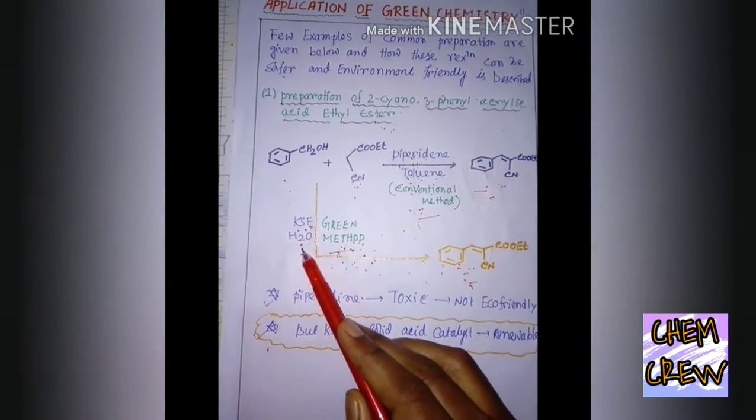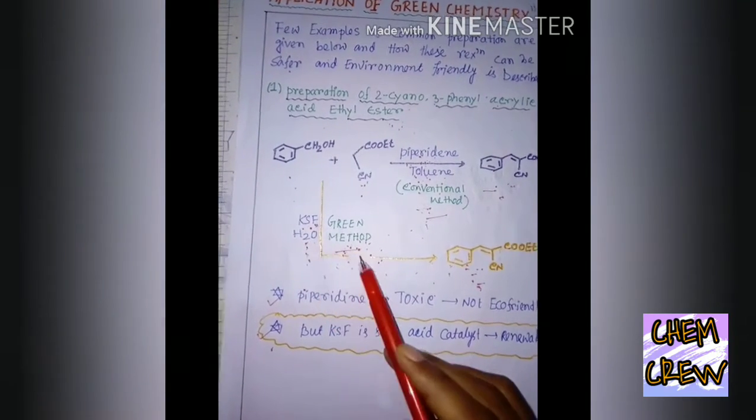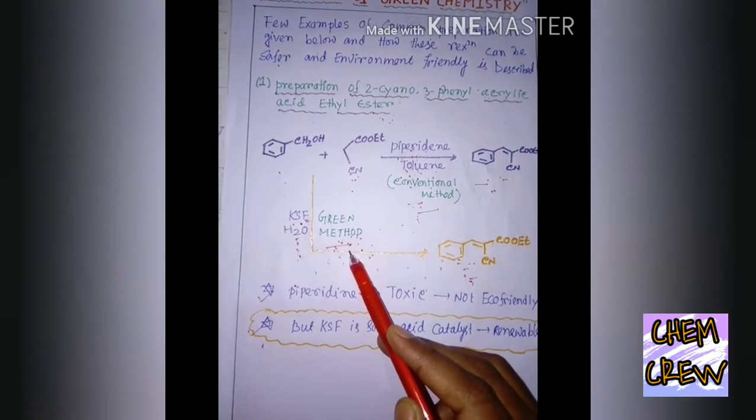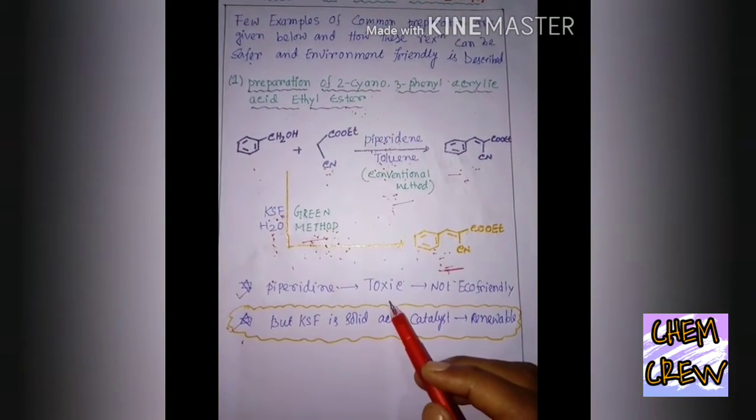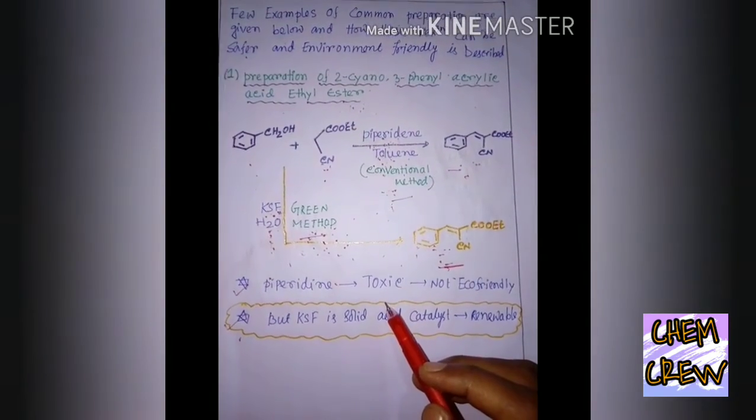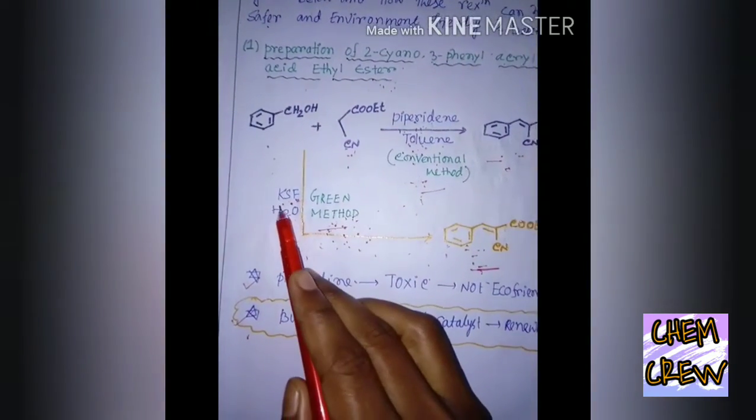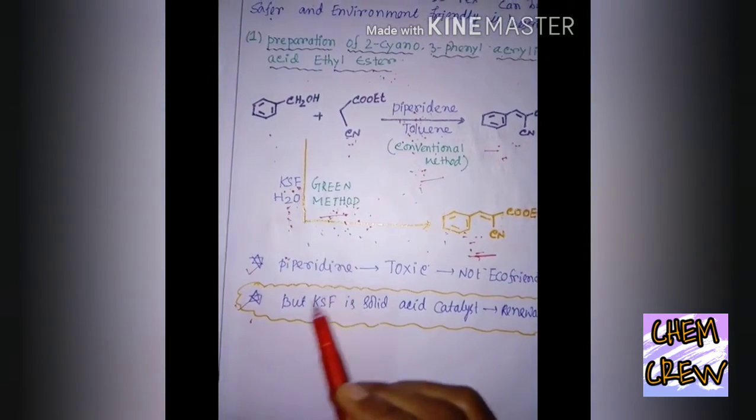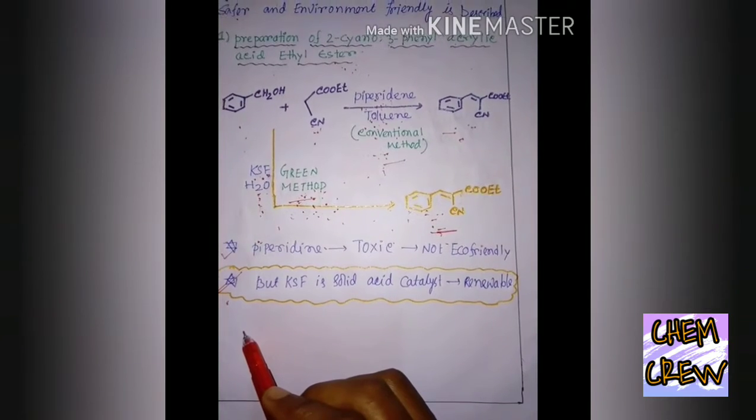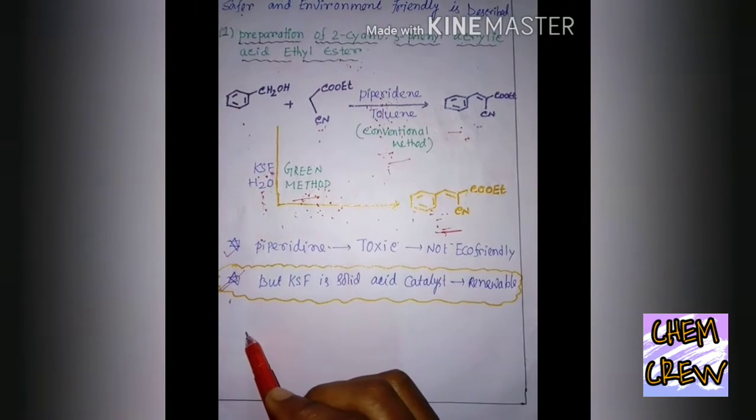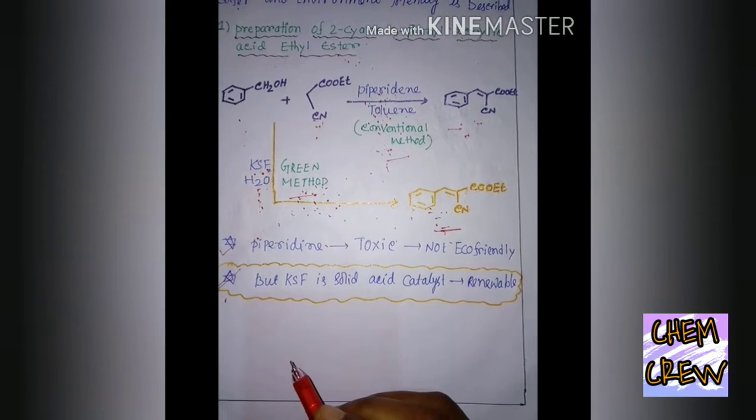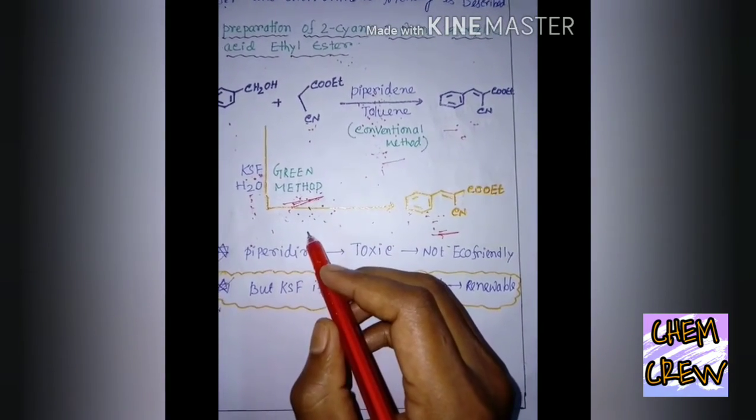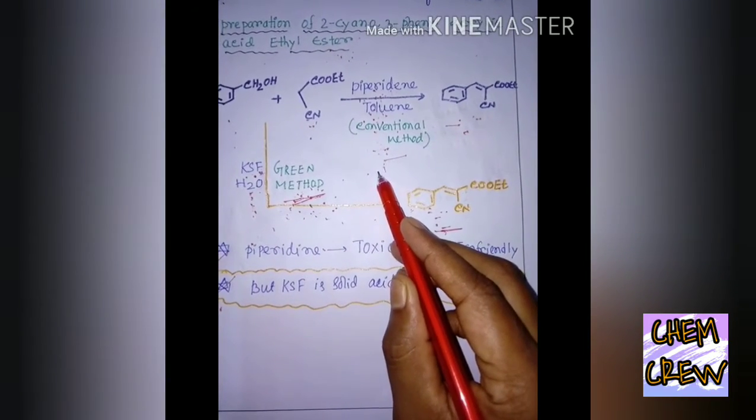water is a better solvent. This is why this green method is an eco-friendly approach for the synthesis of 2-cyano-3-phenyl-alkyl-acid ethyl-ester. And moreover, the catalyst used in the green method is renewable, which is the principle of green chemistry. So, here this green method is more preferable than this conventional method.